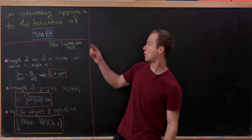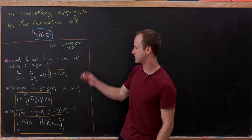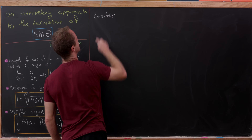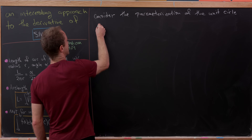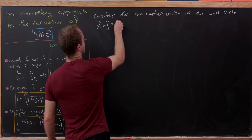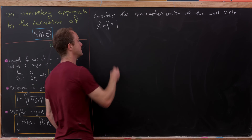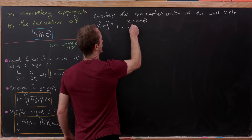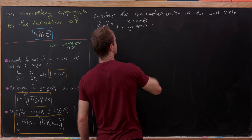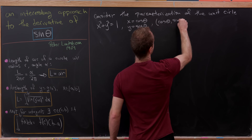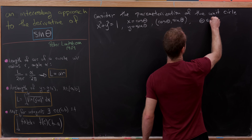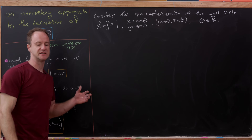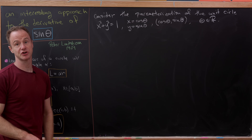Now let's get to the goal of finding the derivative of the sine function using these tools. We'll start by considering the parameterization of the unit circle. The equation of the unit circle is x squared plus y squared equals one, centered at the origin. The parameterization is given by x equals cosine theta and y equals sine theta — the points along this circle are of the form (cosine theta, sine theta). Theta can be any real number, though we only need theta between 0 and 2 pi to produce the whole circle. Let's get a picture of this on the board.